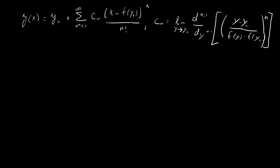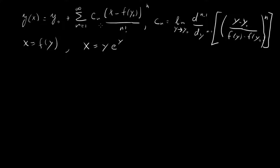That's a big formula. What's an example we can actually do to see this in action? An important point is that x is a function of y in this same form. We know one function defined exactly like this: the Lambert W function, defined as x equals y·e^y.